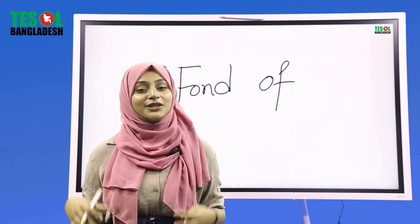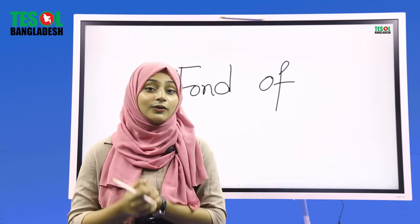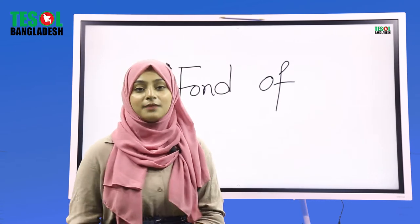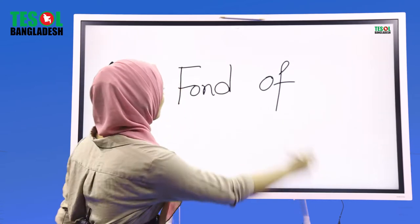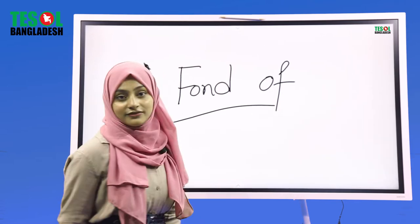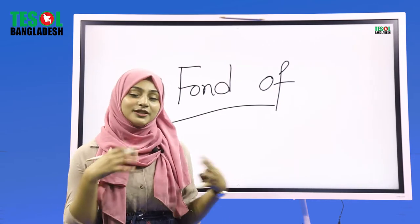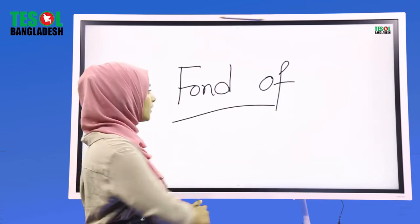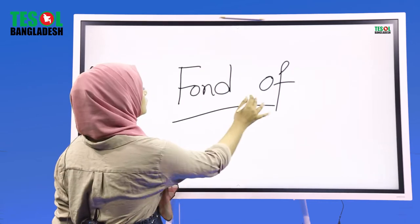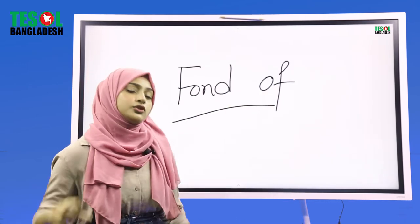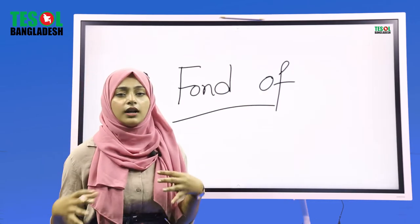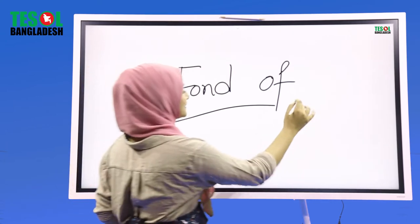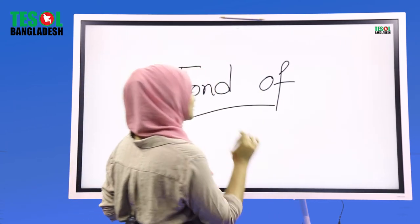Jakhon kona kichu bhalo lagye ba a khu pachan dhoi, takhon kintu aamra 'fond of' bhai bhaar kori. 'Fond of' means hoche kona kichu bhalo lagye ba a khu pachan dhoi. So, 'like' use na kore, aamra 'fond of' use korebo.